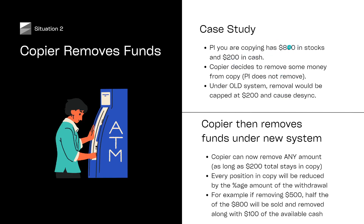So in the situation above — you've got a $1,000 copy which is $800 stocks and $200 cash — say if you take $500 out, which is 50%, what would happen is half your stocks would be sold, so $400 would be sold and taken out, and half your cash would be taken out. So you'd be left with $400 in stocks, $100 in cash, which is $500. But you'd still have the 80-20 ratio within the copy, so you'd be in sync just with a smaller amount. If I wanted, I could take $900 out of my $1,800 copy and all it's going to do is sell half of every single one of camper van's positions. This is a great way to remove funds and reduce your copy size without causing desync and without having to stop and restart the copy. I really like what they've done here.